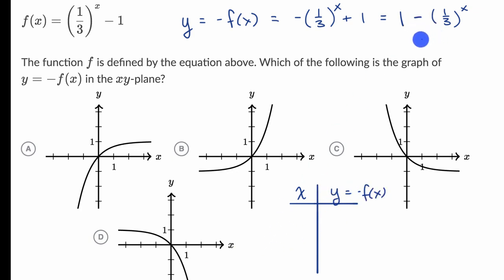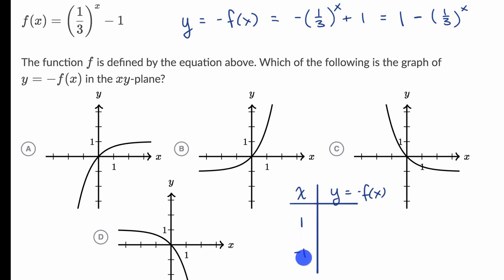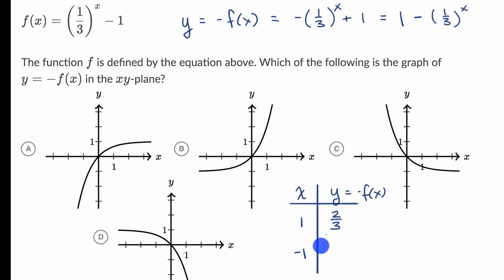We could try zero, but every one of these graphs has the point (0, 0), so that won't help us differentiate between graphs. Let's try x equals one and x equals negative one, since they're easy to calculate. When x equals one, one-third to the first power is just one-third, and one minus one-third is two-thirds.